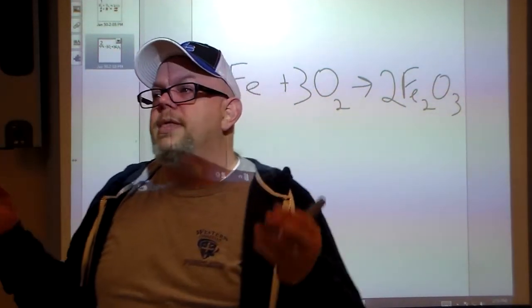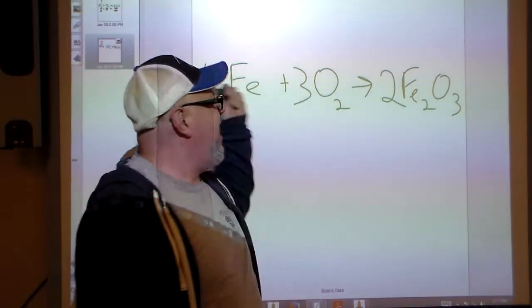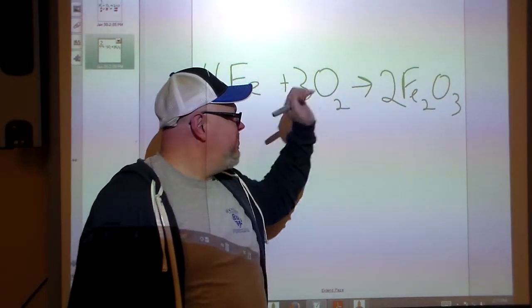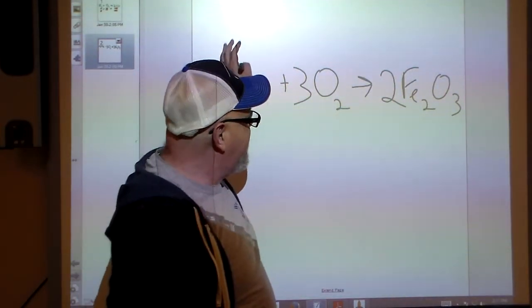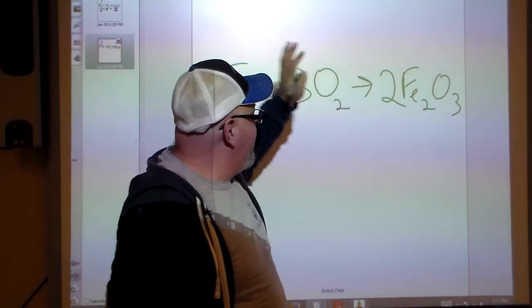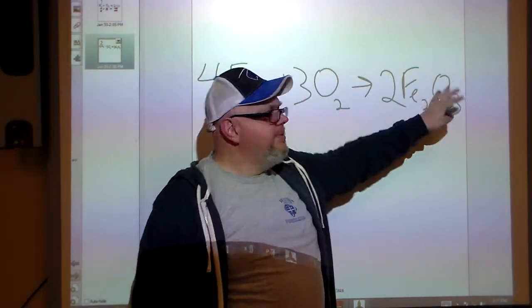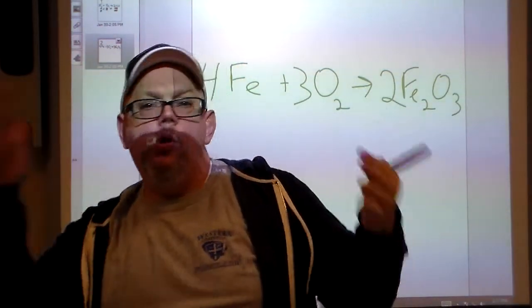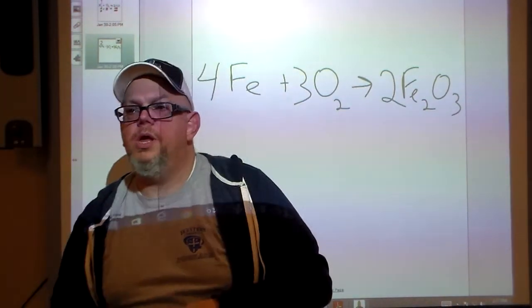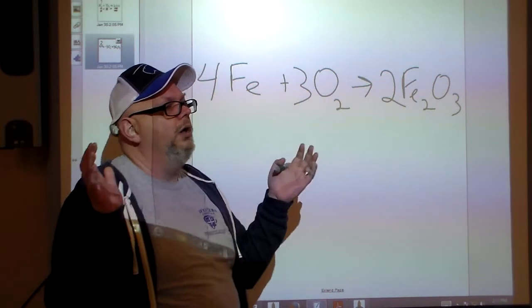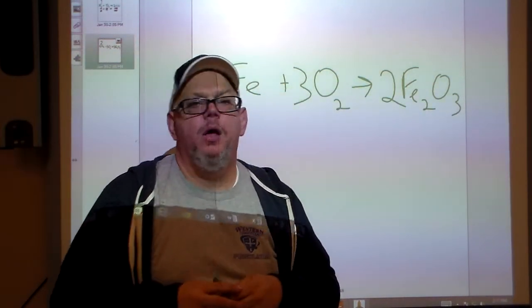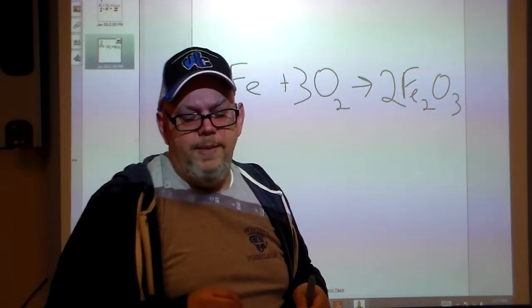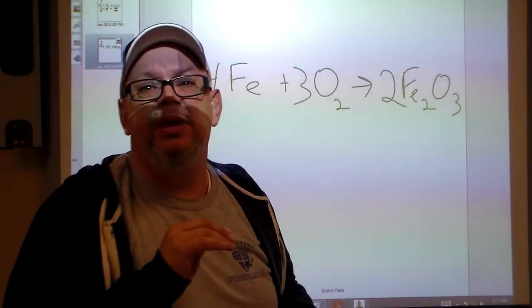And for some students, they may think, well okay, I understand balancing numbers like the Fe's same as Fe here and the O's here the same as the O's on this side, but how does this all go together? What are we talking about here about chemical reactions? Why is it so important? Well, I'll let you in a little secret.